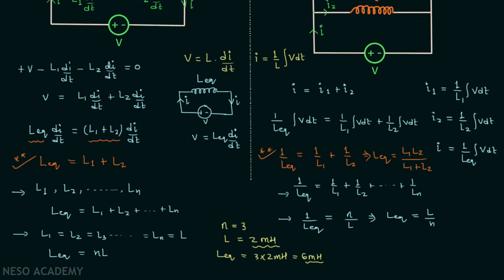When inductors are connected in parallel, the overall equivalent inductance reduces. For example, if 3 inductors are connected in parallel and each has an inductance of 2 mH, then the equivalent inductance equals 2 mH divided by 3. Compared to 2 mH, 2/3 mH is less, so the equivalent inductance reduces in parallel combination.